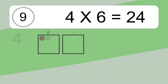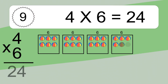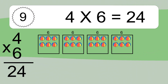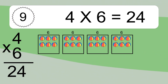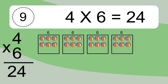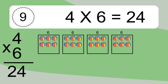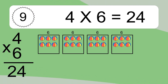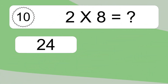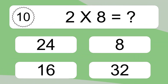4 times 6 equals 24. We have 4 boxes, and each box has 6 colorful balls inside. If you count all the balls in all the boxes together, you will have 4 times 6 balls. This equals 24 balls.